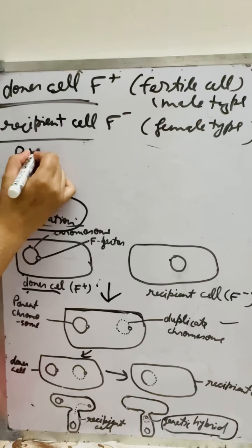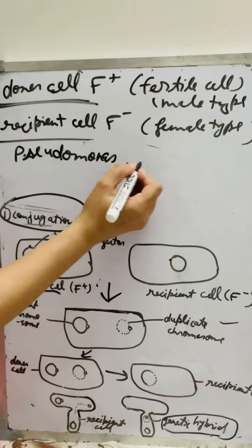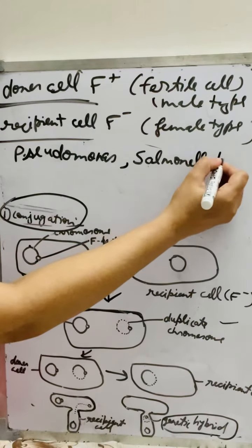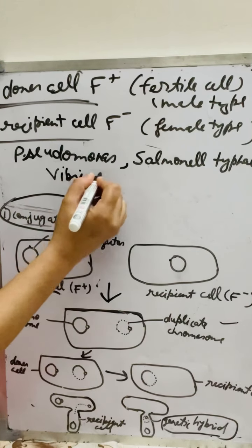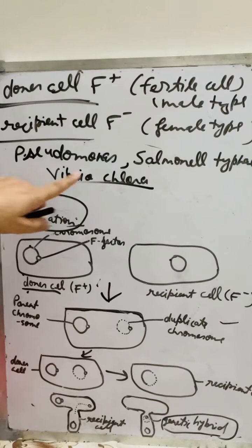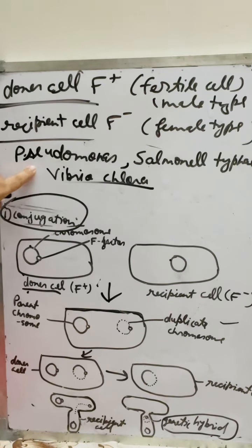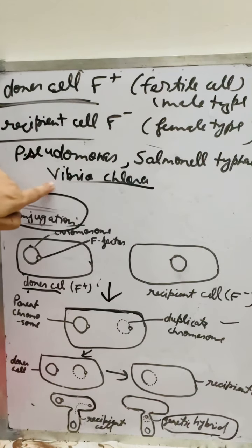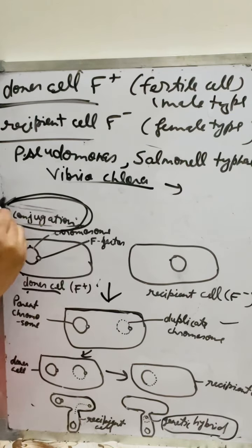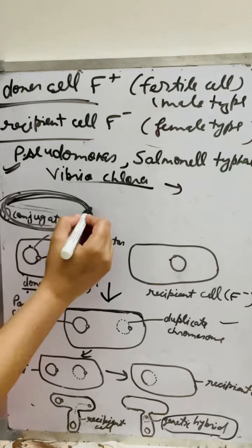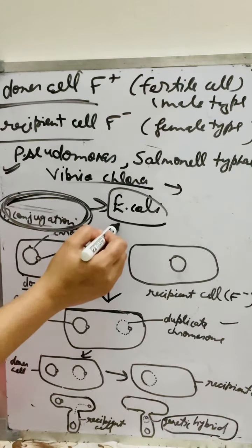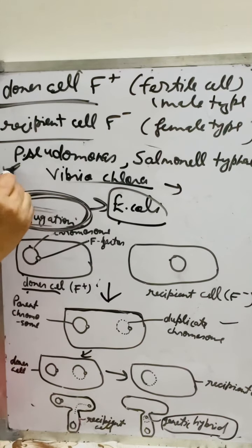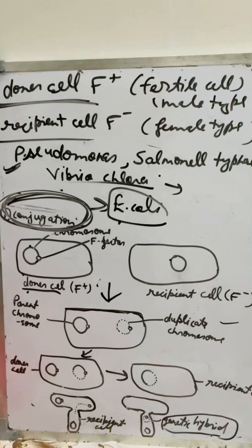Besides E. coli, conjugation also occurs in Pseudomonas, Vibrio cholerae, and Salmonella typhi. Pseudomonas causes pneumonia, Salmonella typhi causes typhoid, and Vibrio cholerae causes cholera. This completes the process of conjugation.